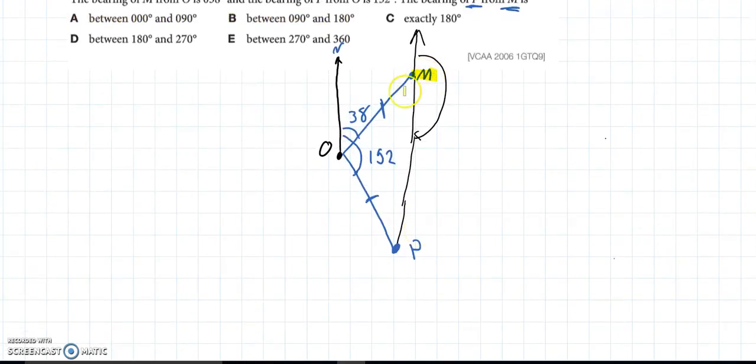This M is at an angle of 38 away from that north line. If I continue that north line down, this angle here will be 28. So, because 152 plus 28 is 180.